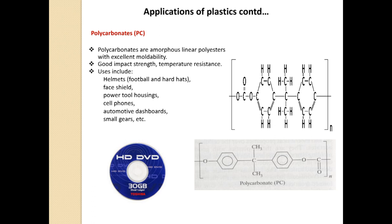Next is polycarbonate, which is an amorphous linear polyester with excellent moldability, good impact strength, and good temperature resistance. Its major use is in the manufacturing of CDs and discs, as well as helmets, face shields, power tool housings, cell phone housings, automotive dashboards, and small gears.